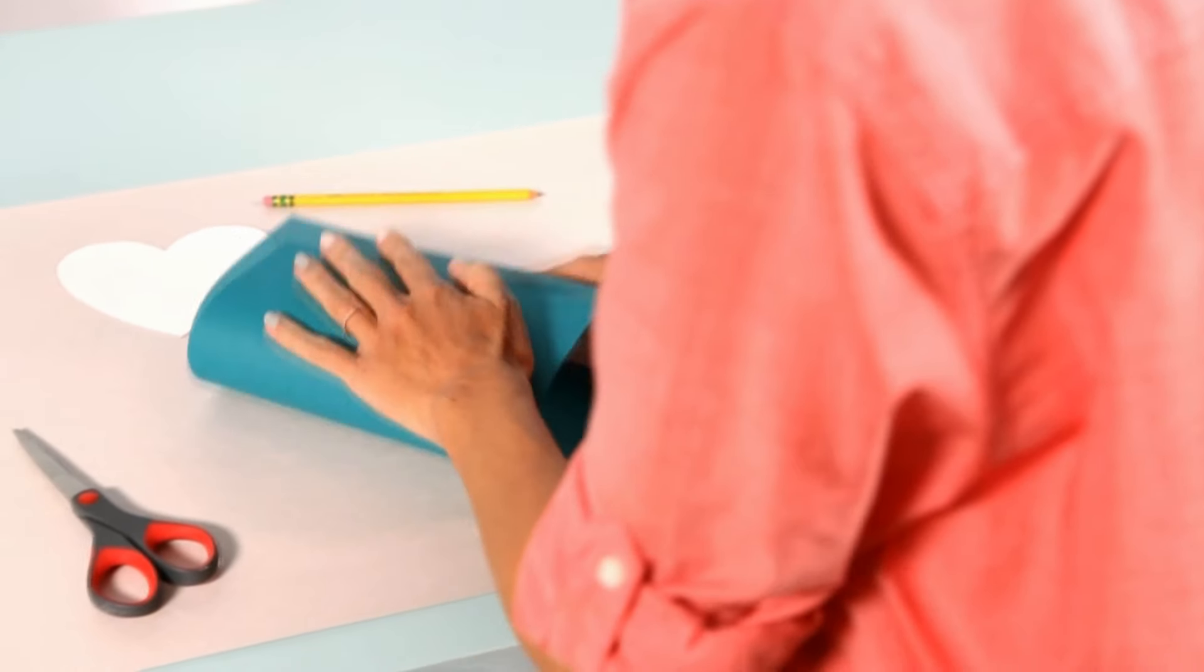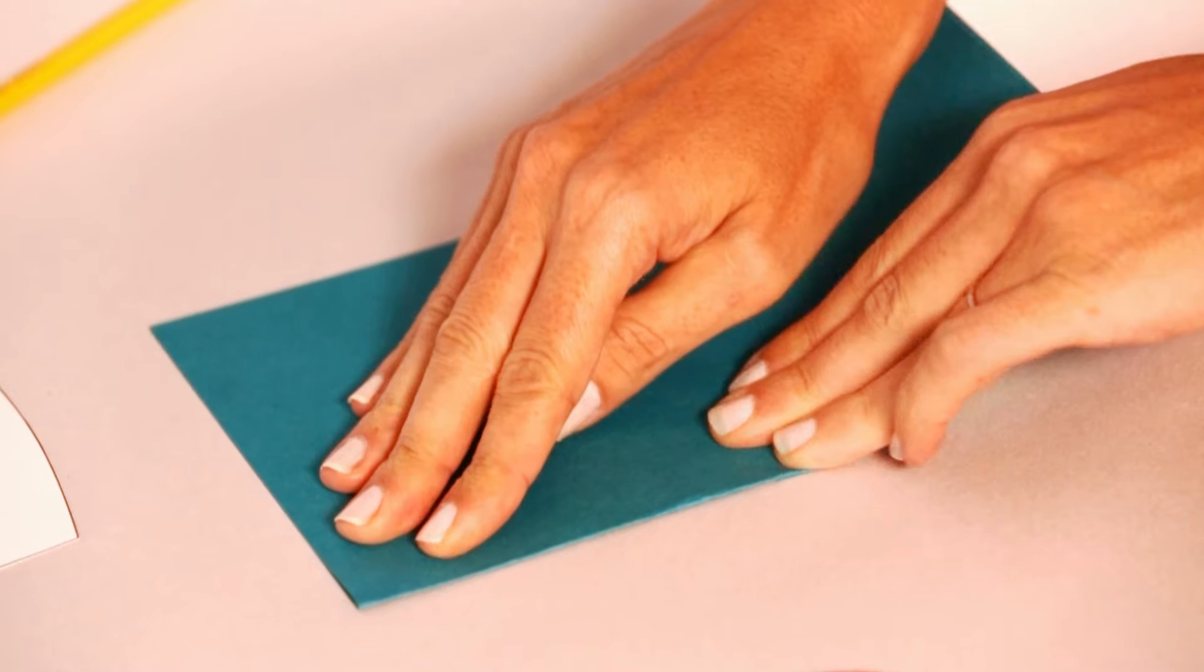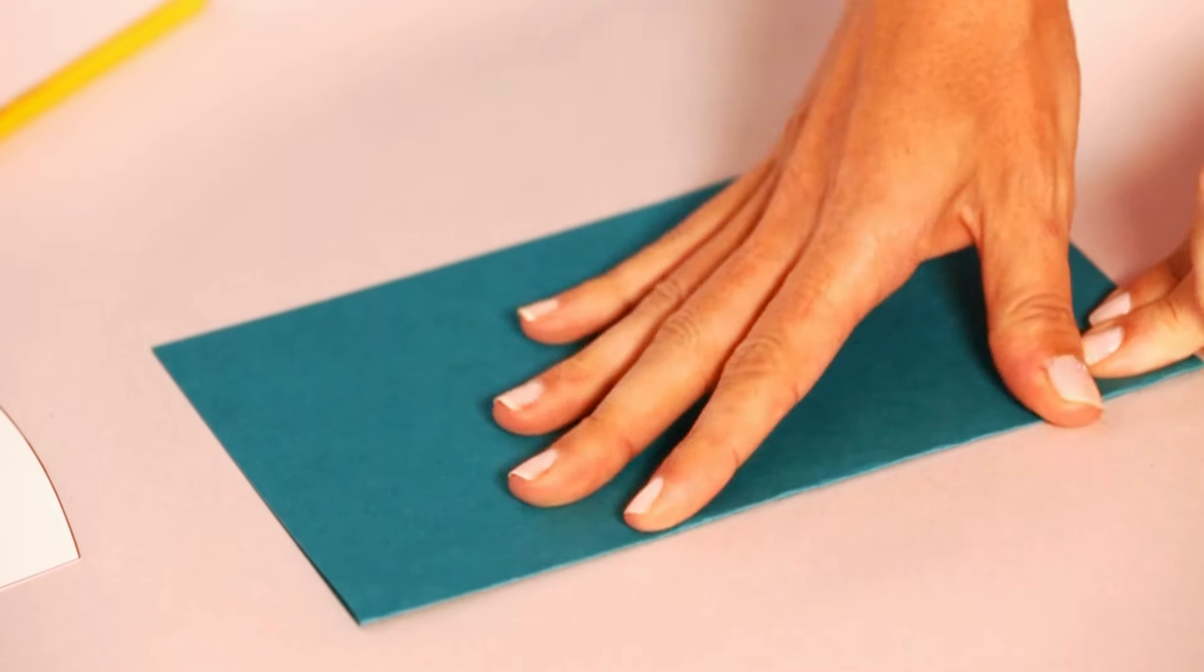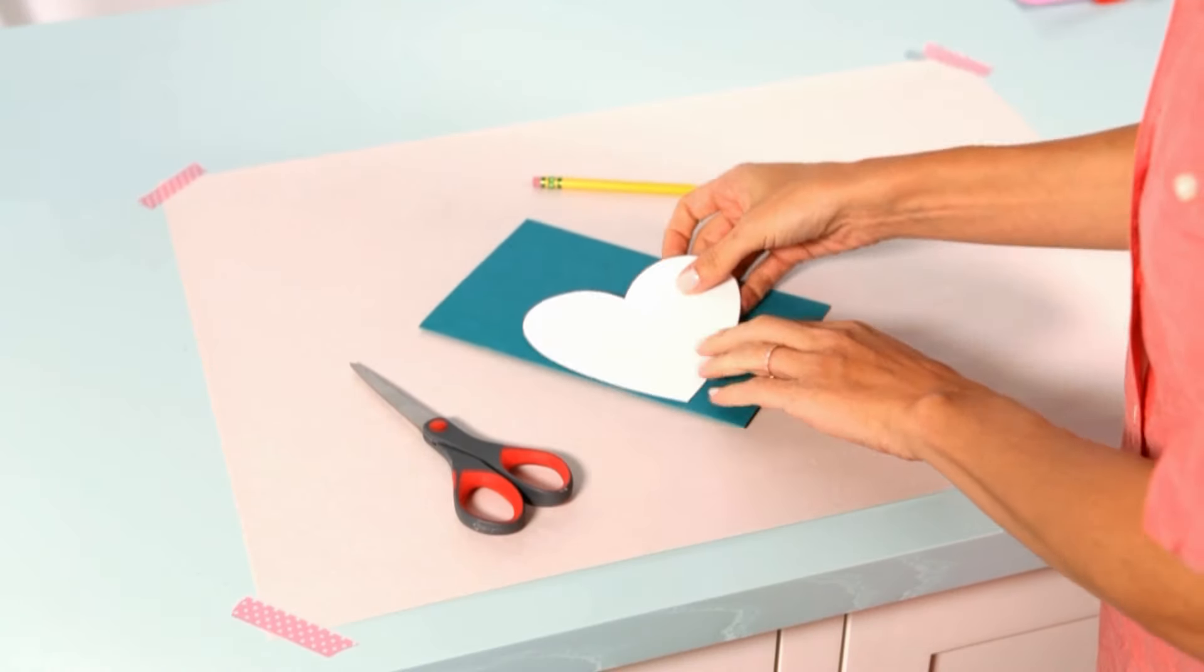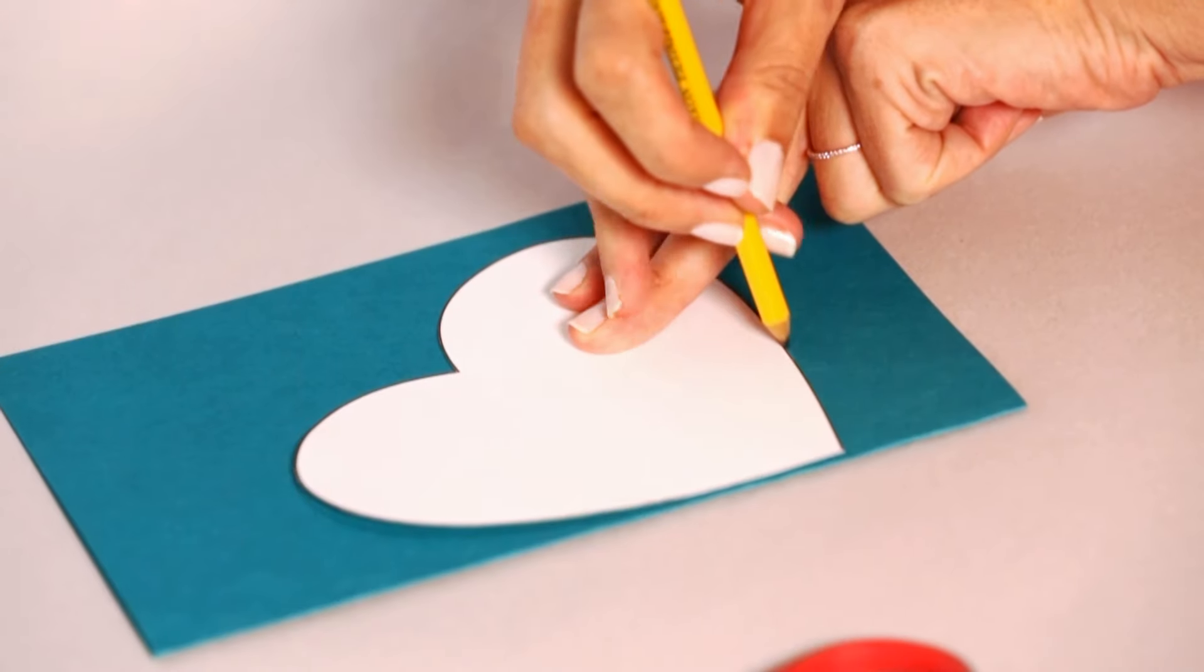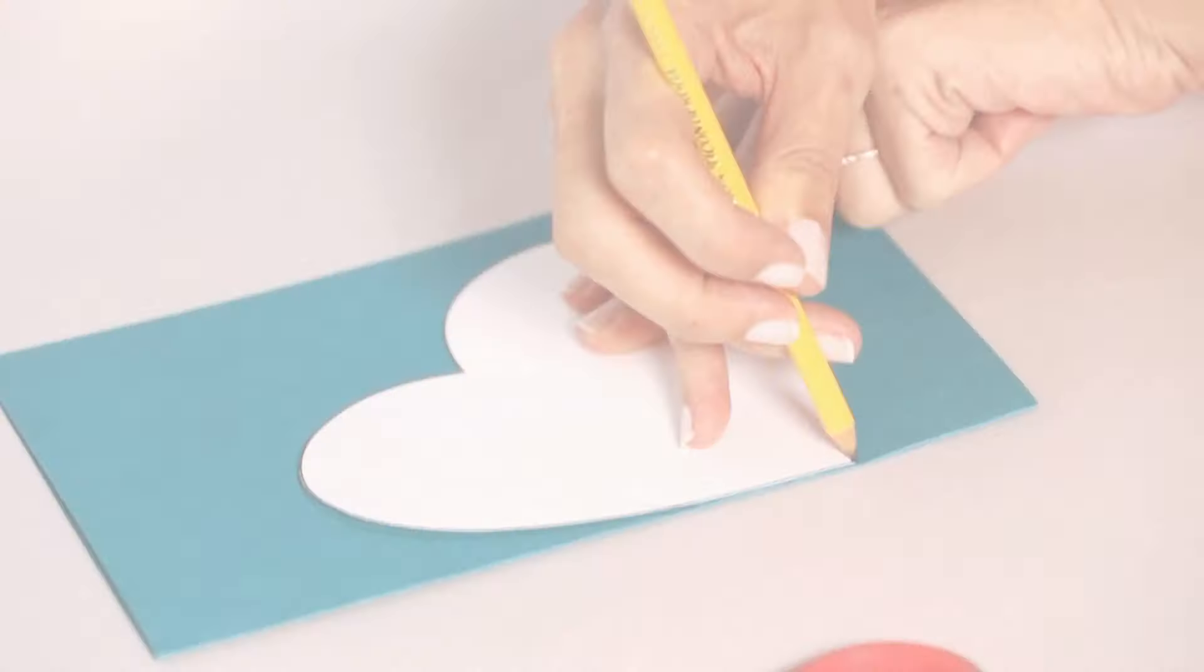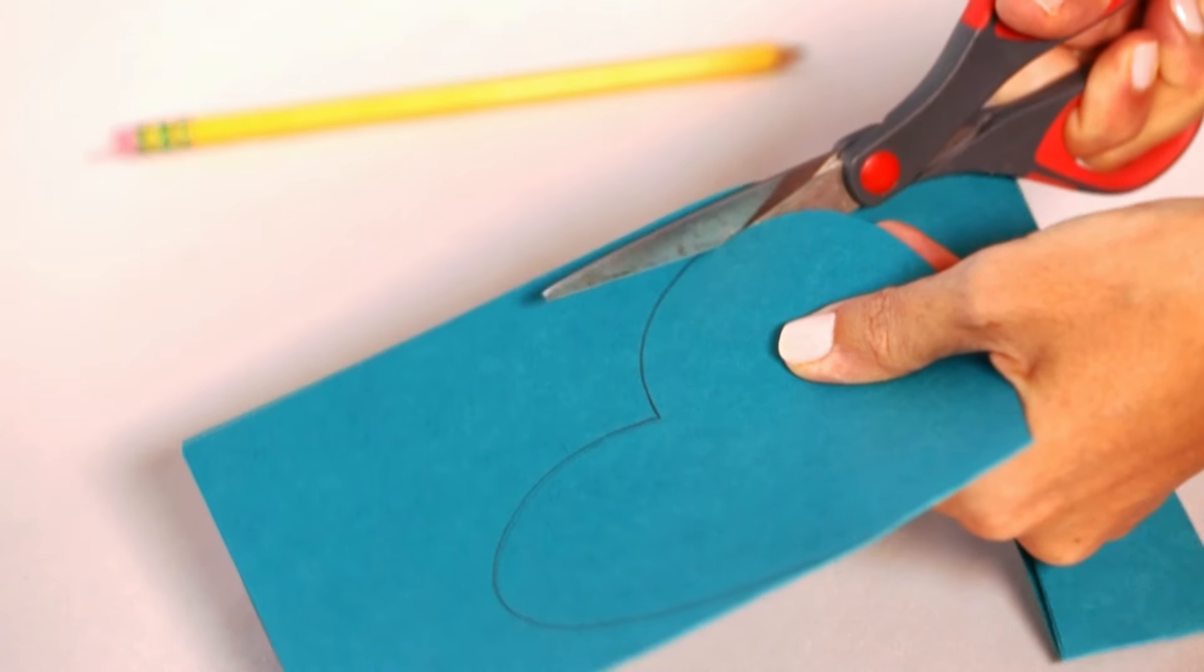To make the back of the card, fold a piece of cardstock in half. Take the large heart from the template and place a straight edge on the fold like this. Cut it out just inside the pencil line.